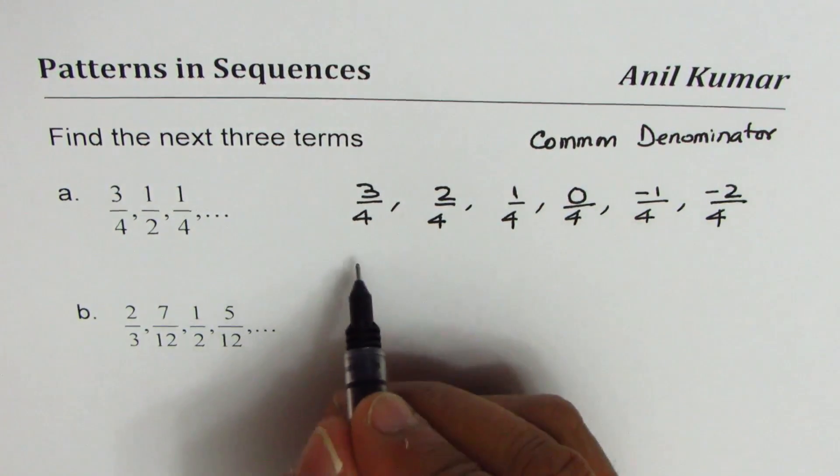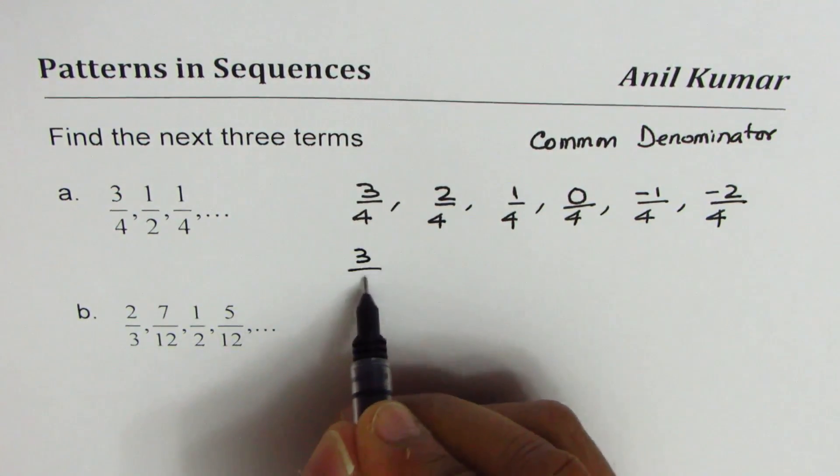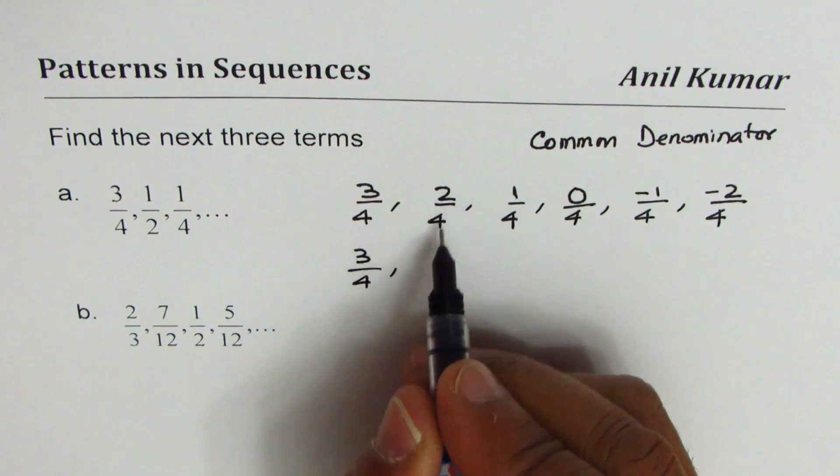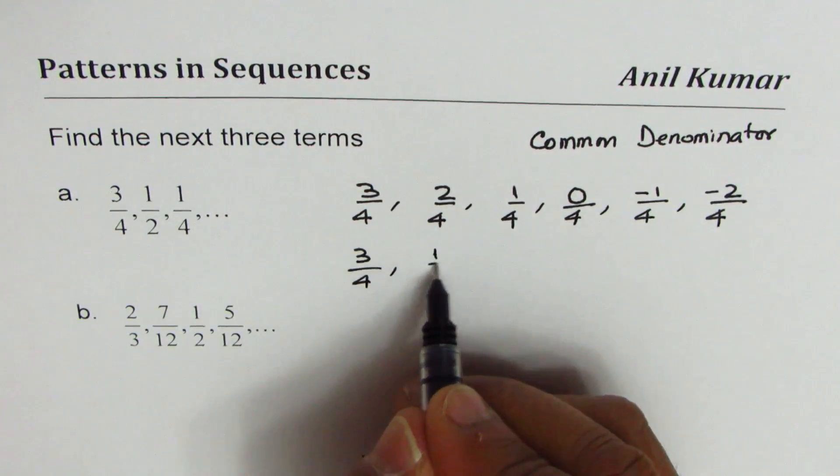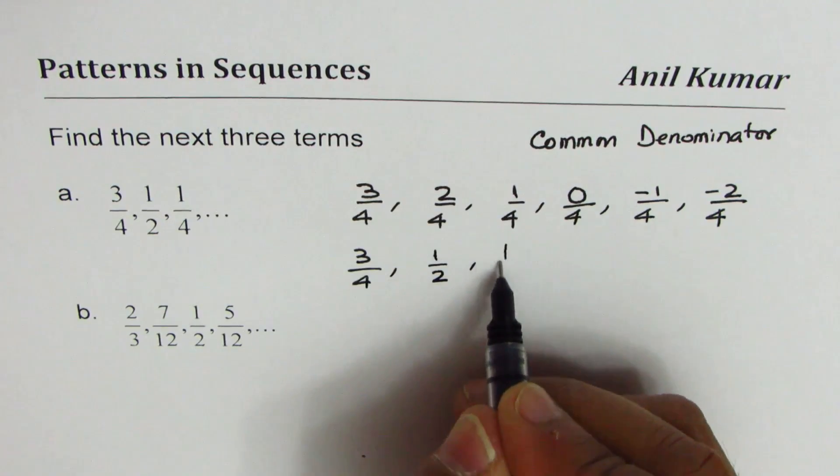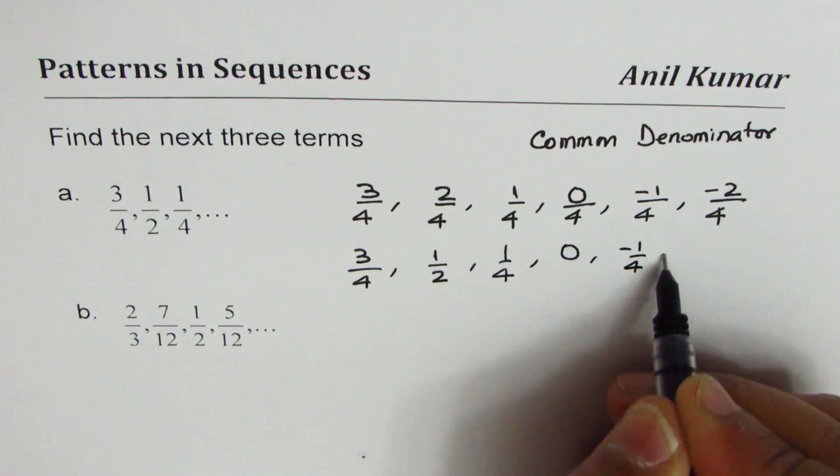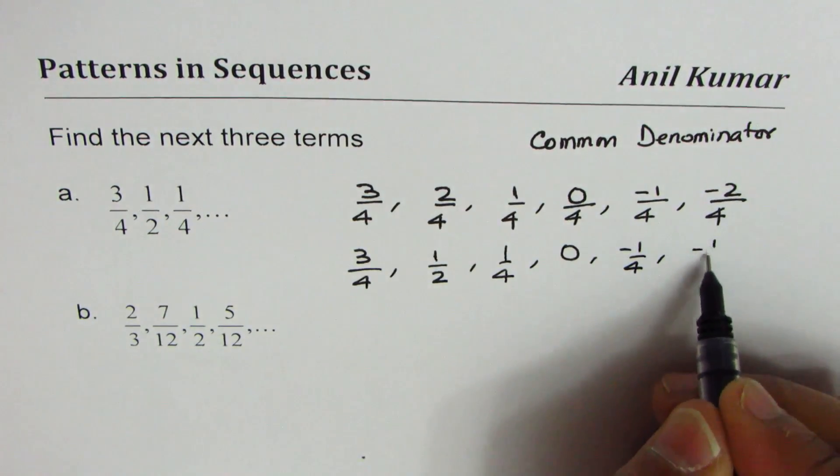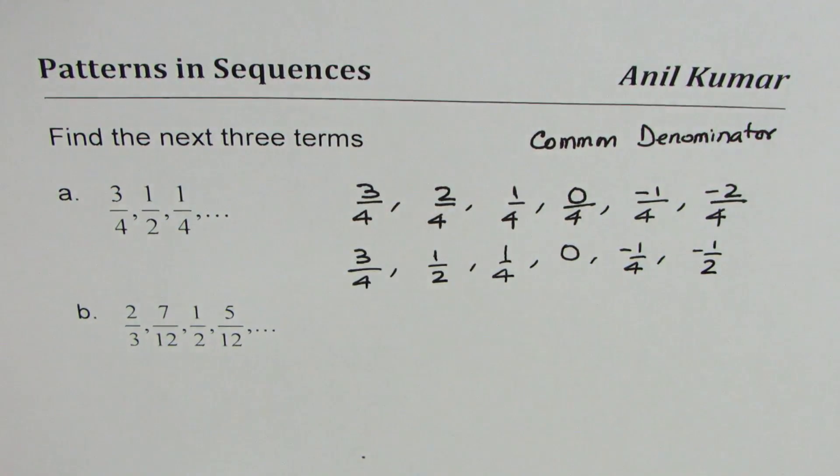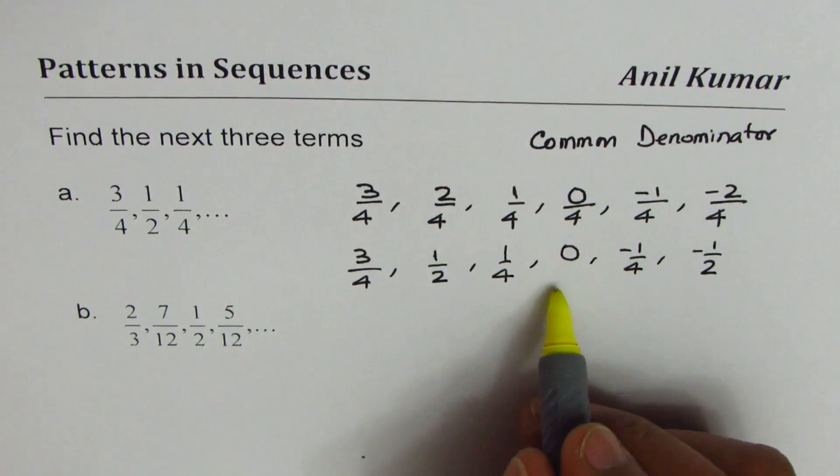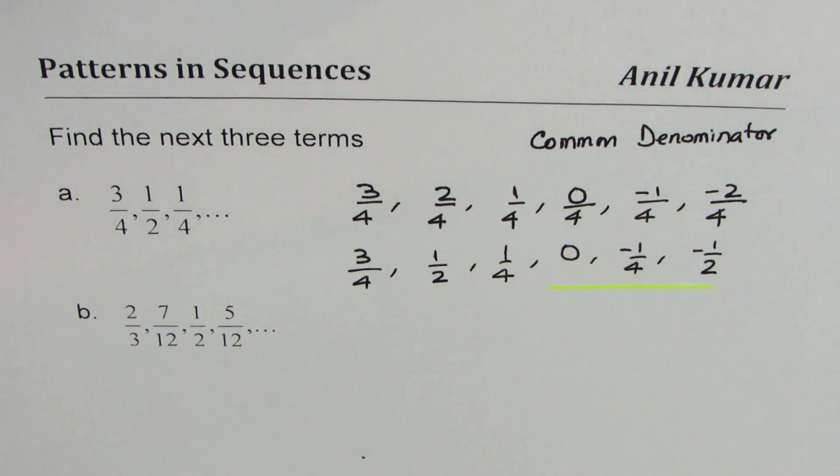We can now write down our answer. This pattern is 3/4, 2/4 is 1/2. We'll simplify and write down the original form. This is 0, this is -1/4, and that is -1/2. So these are the next three terms for the given sequence.